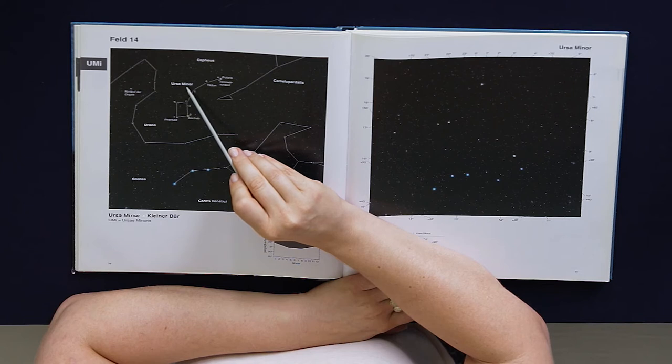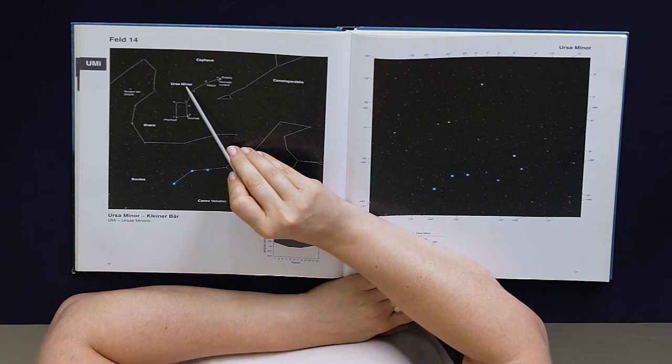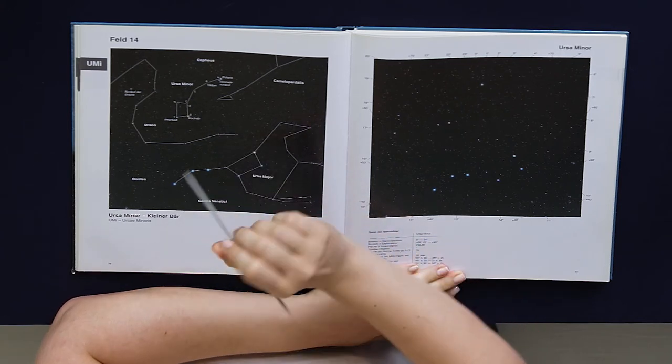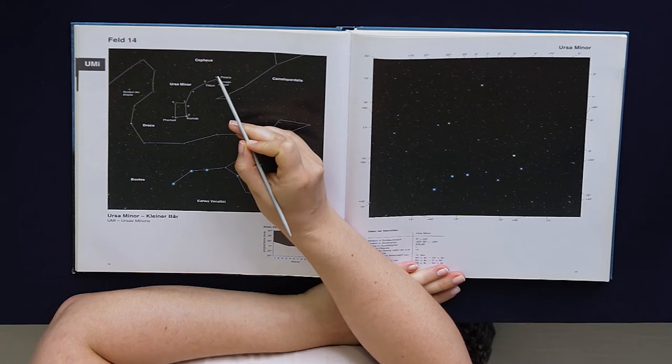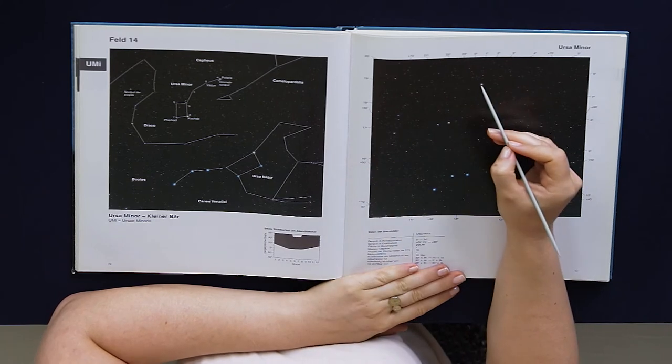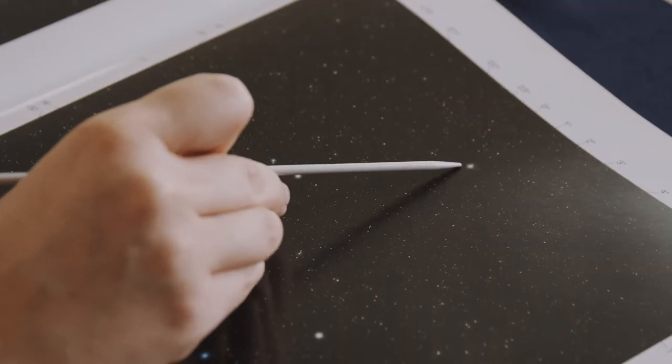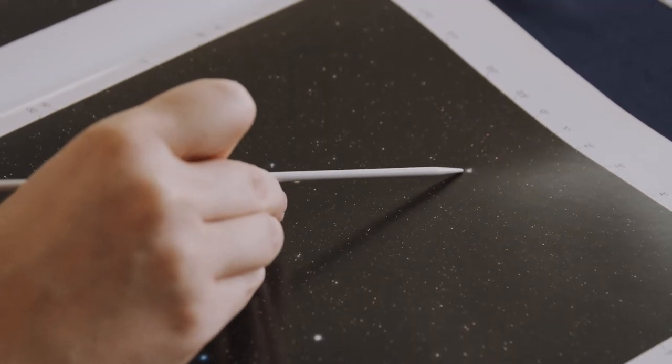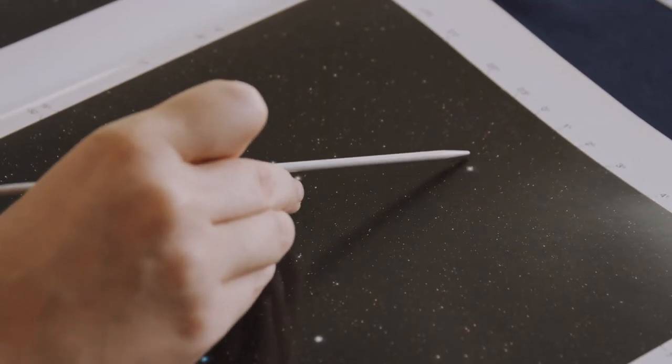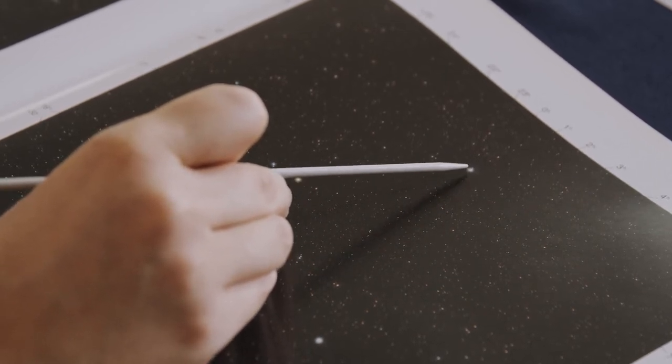So this is the first one that we want to look at: Ursa Minor, here means Little Bear. And again, the brightest star in the constellation is called Alpha. It's here, and this star is called Polaris. Polaris, this is the North Star.